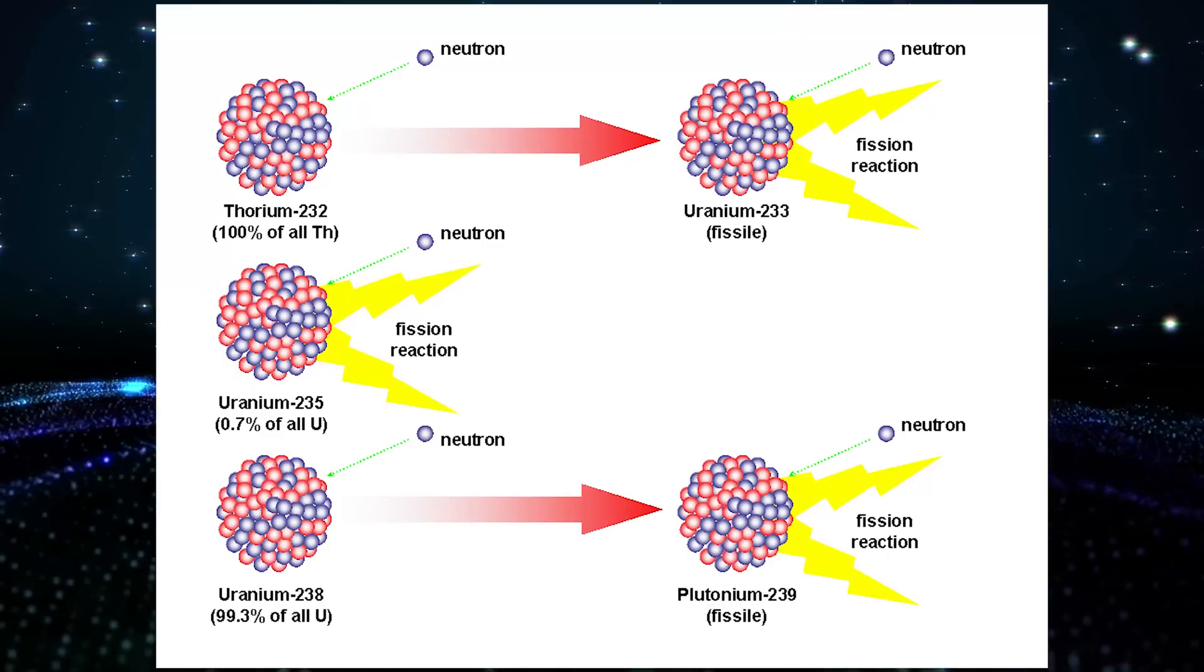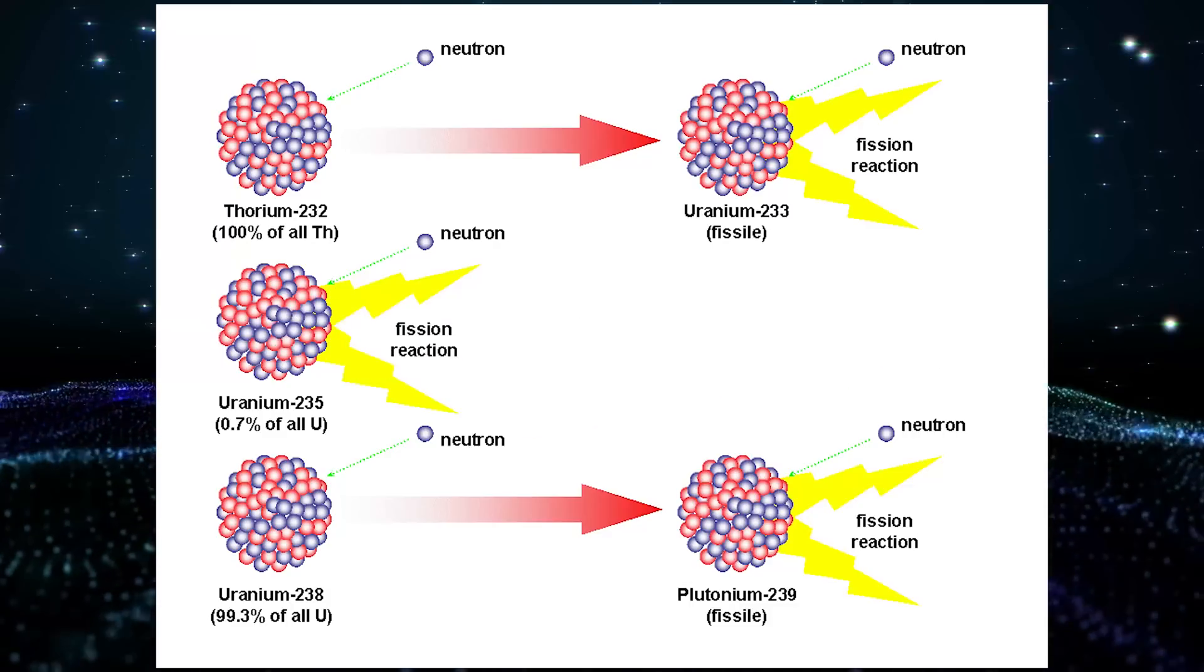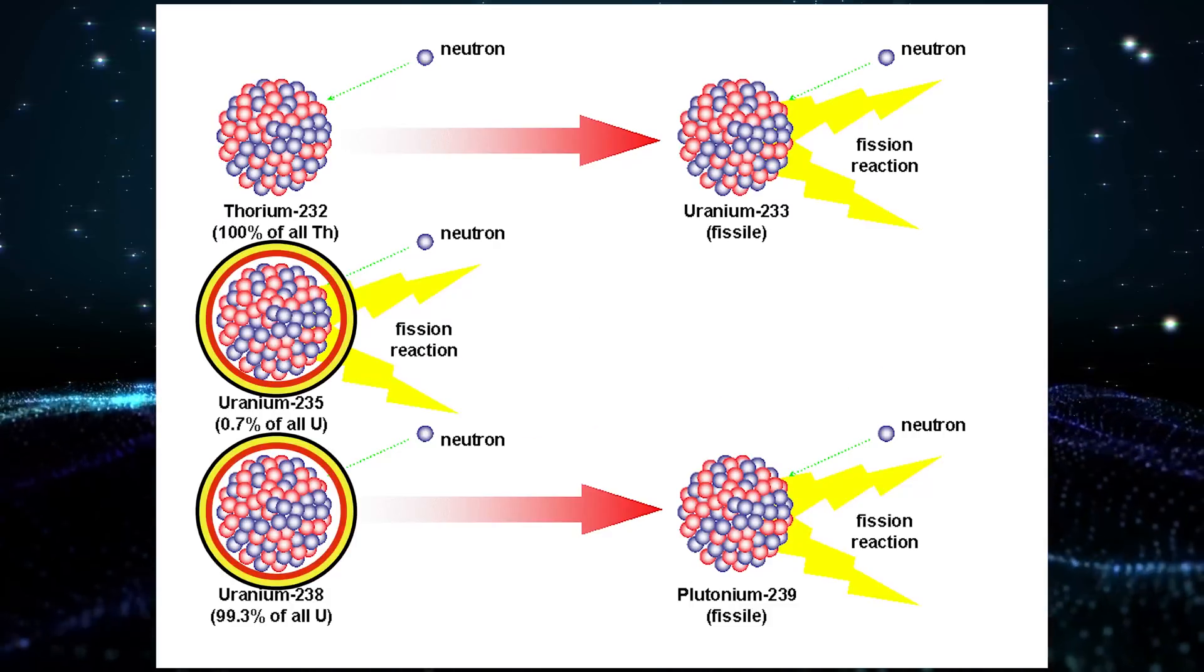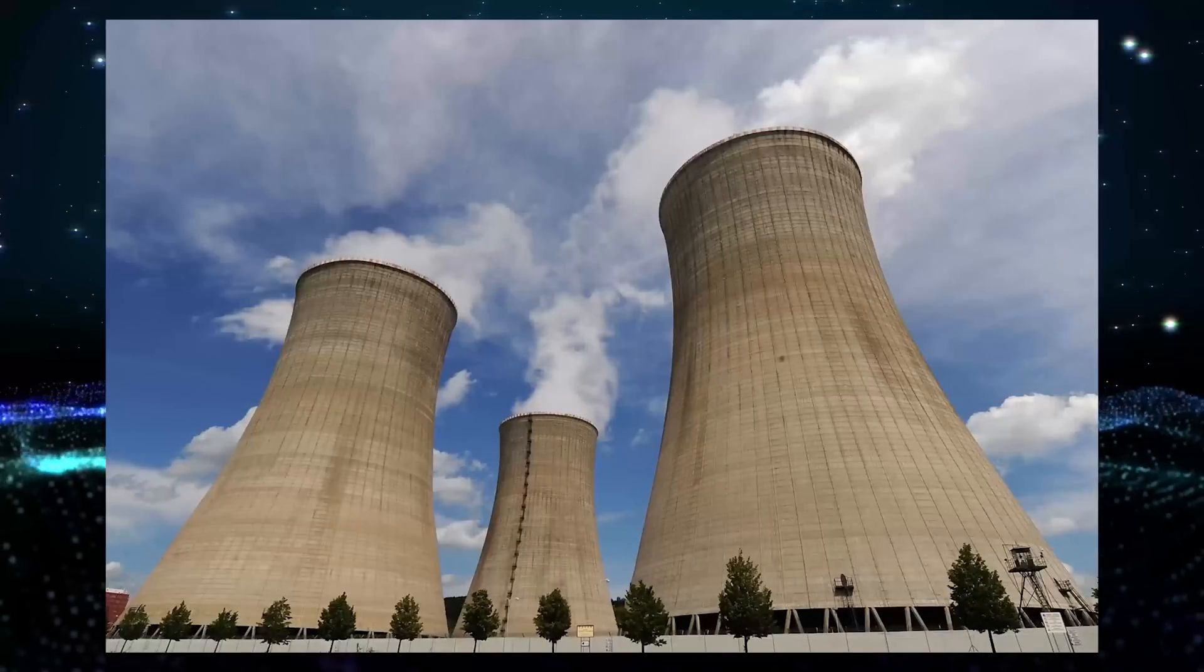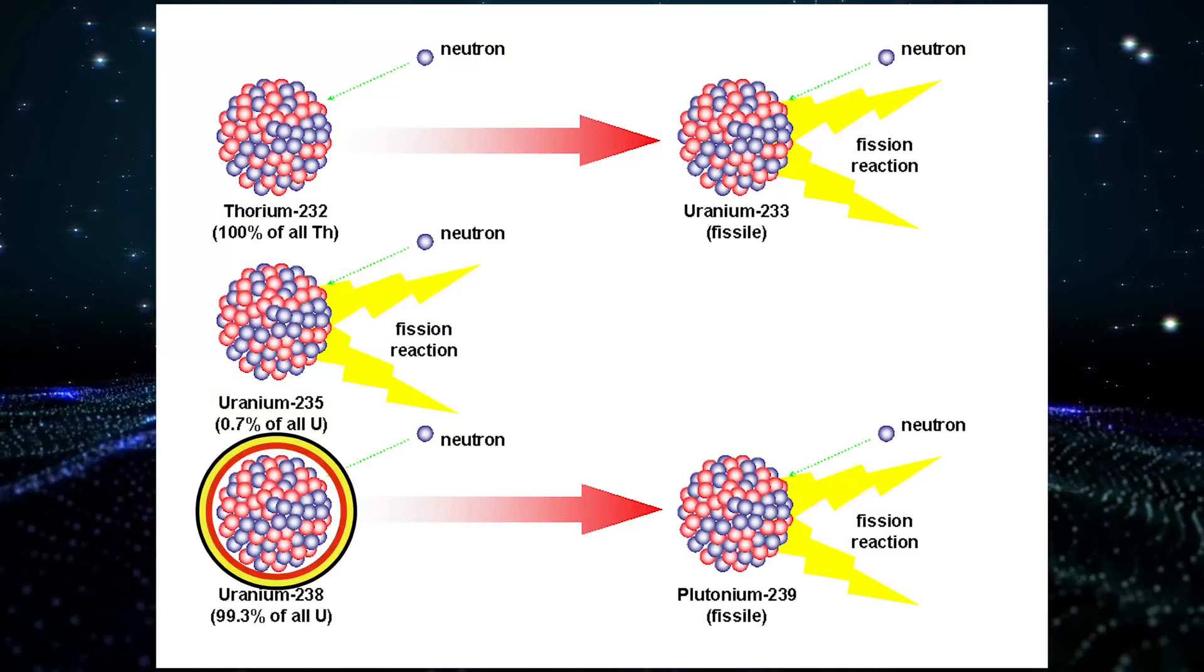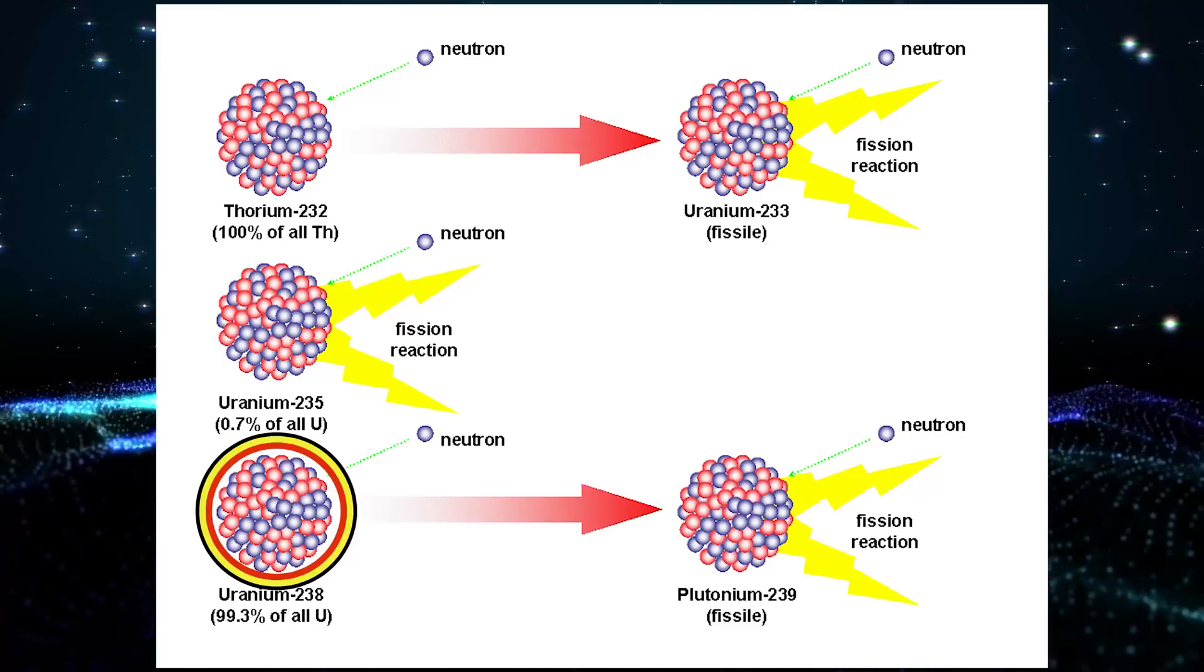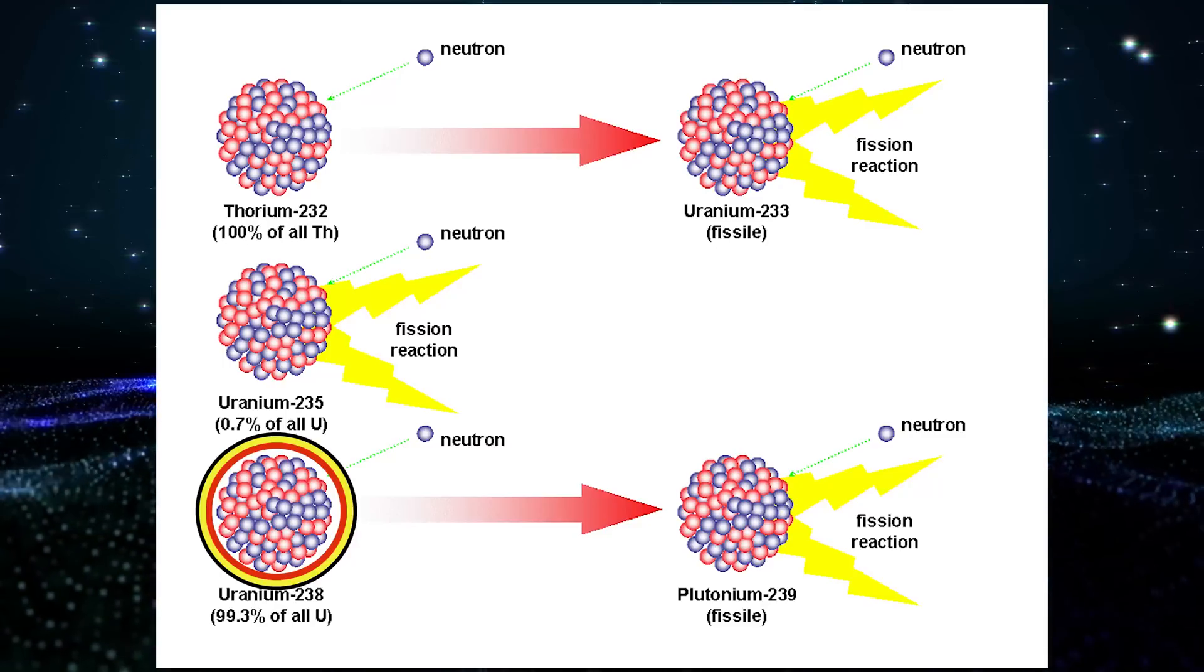Before I continue, I must explain that there are two isotopes, or kinds, of uranium: uranium-238 and uranium-235. Today's reactors split uranium-235 to produce power. Uranium-238 absorbs neutrons instead of splitting immediately like uranium-235.